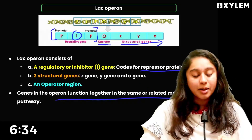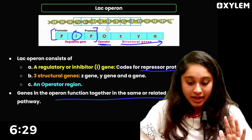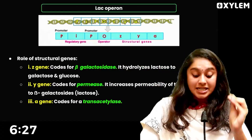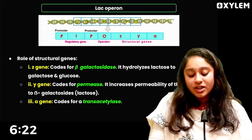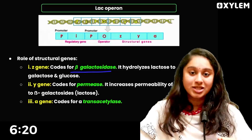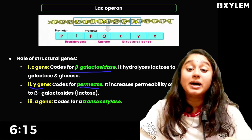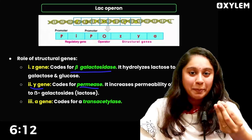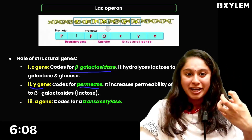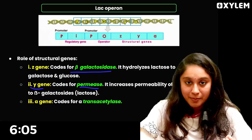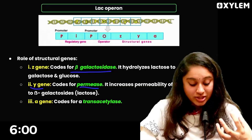These structural genes are responsible for all the lactose breakdown metabolic pathways. Gene Z codes for beta-galactosidase, which actually breaks down lactose. Gene Y codes for permease — beta-galactosidase permease — which helps lactose enter the cell.